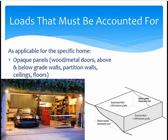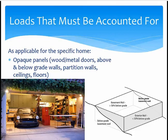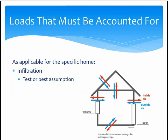The next set of loads a designer has to account for are the opaque panels. These include the wood and metal doors, above and below grade walls — that is, above and below ground walls — which are the exterior walls. There are also partition walls, which are interior walls, and there are ceilings and floors. The designer needs to account for each one of these. Infiltration is the next load that has to be accounted for — the uncontrolled air leakage into the conditioned space through cracks, openings, and leakage through the attic, ceiling, crawl spaces, and/or the basement if applicable.